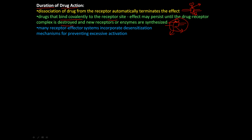And so new receptors or enzymes are synthesized and that might take, it's called de novo synthesis, and that might take a little while to be synthesized so a new receptor can be placed on the cell surface. Many receptor-effector systems incorporate desensitization mechanisms for preventing excessive activation. And we'll talk about some of these desensitization mechanisms when we talk about G-coupled proteins.